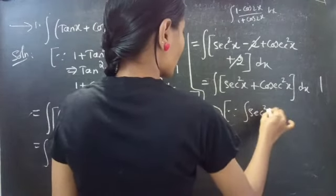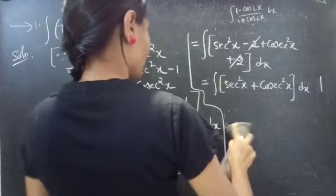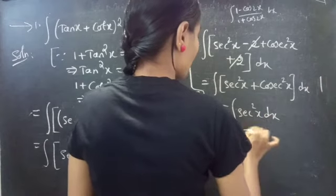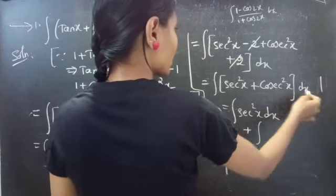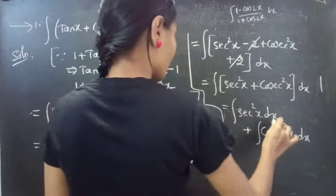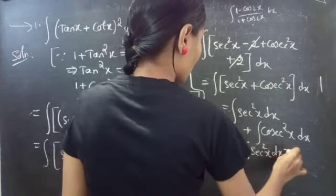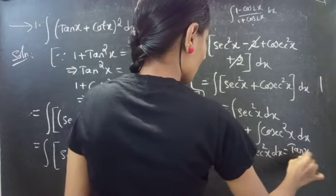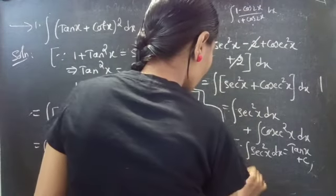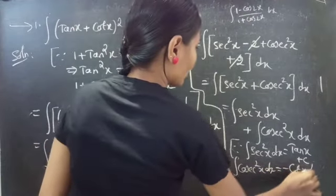Since the integral of sec²x dx equals tan x + C, and the integral of csc²x dx equals -cot x + C, we can now apply these standard results. So we write: integral of sec²x dx plus integral of csc²x dx.